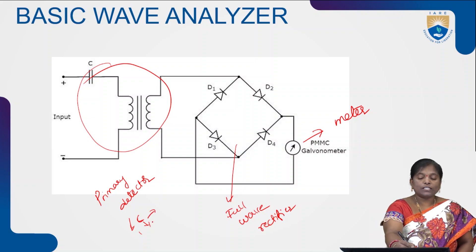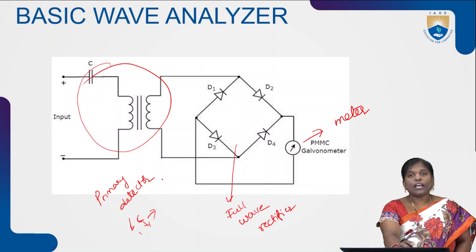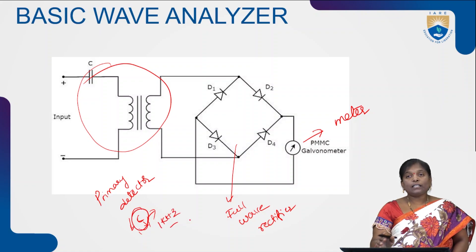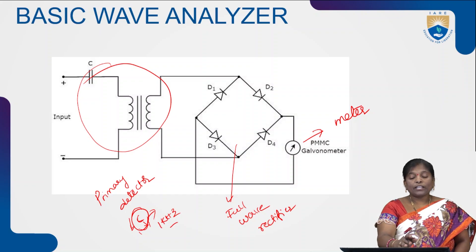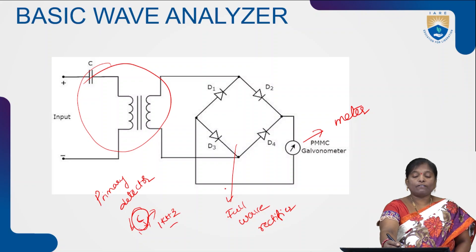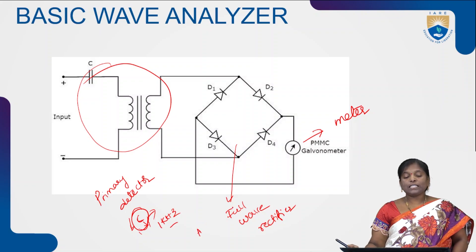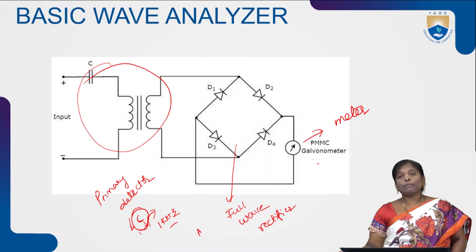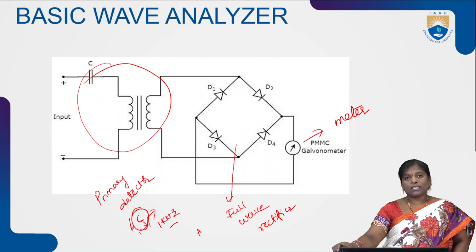The main purpose of the LC-tuned circuit is to tune to a particular frequency. By varying either inductance or capacitance, we can choose a particular frequency. For example, by varying the capacitance value, we choose a frequency of 1 kilohertz. At that frequency, the RMS value of the input signal is obtained with the help of the full-wave rectifier, which converts the AC component into pulsating DC. Finally, the DC voltage is measured with the PMMC meter.